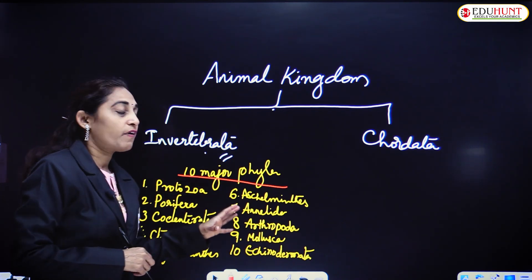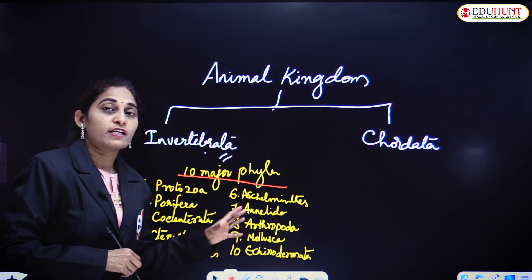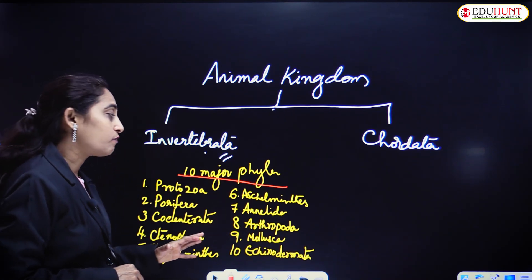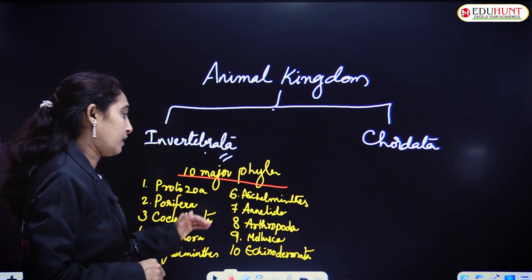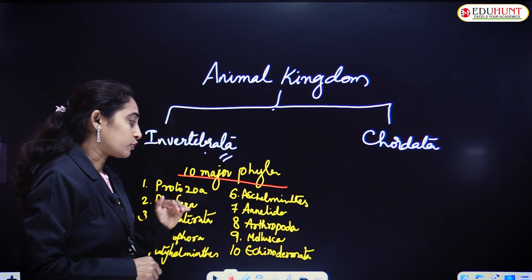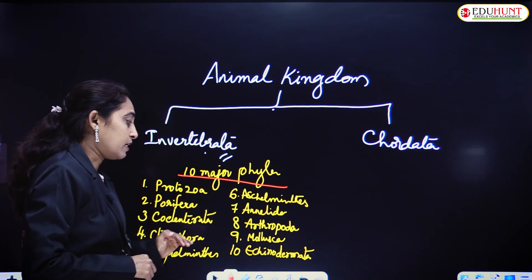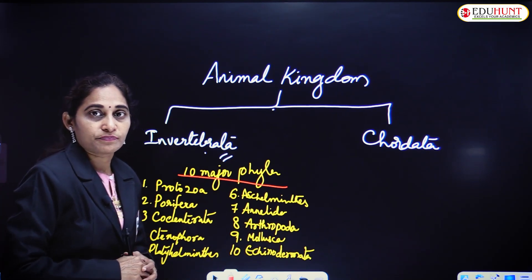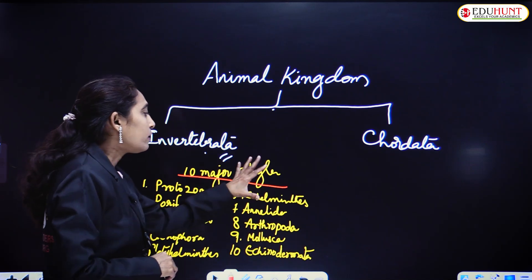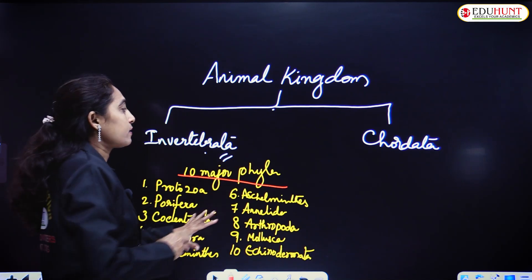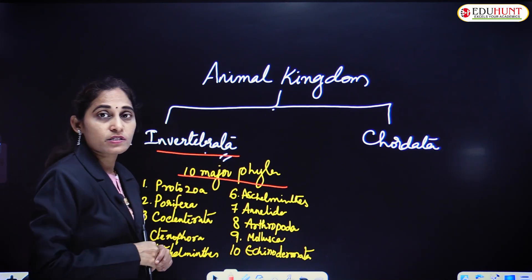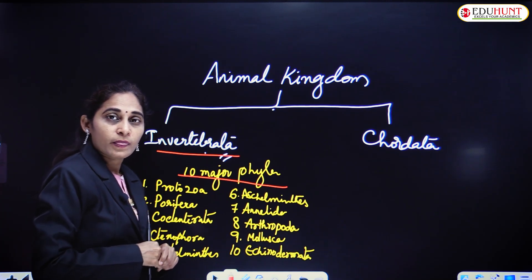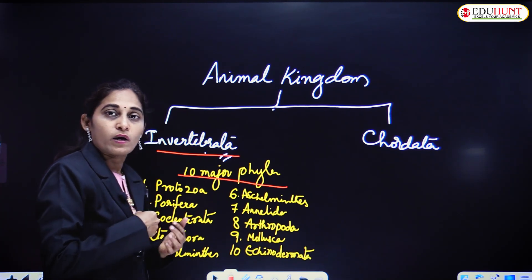All the major phyla general characters and the classification of some of the major phyla like Annelida, Arthropoda, Mollusca, and Echinodermata we have discussed. All these are invertebrates because they do not possess any vertebral column.